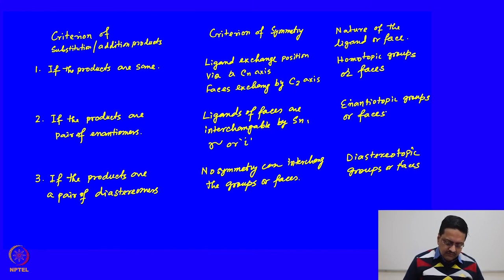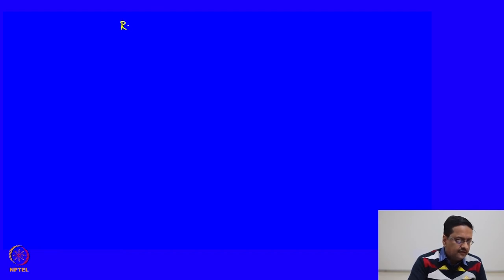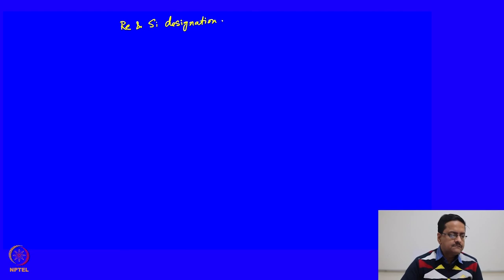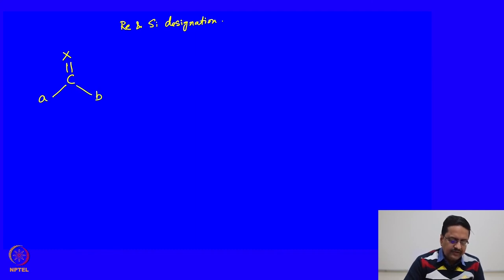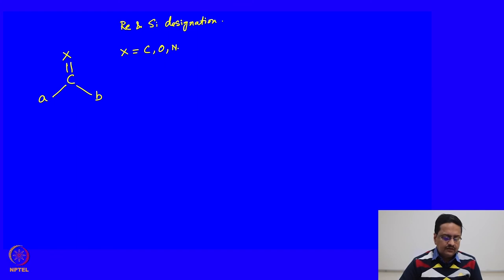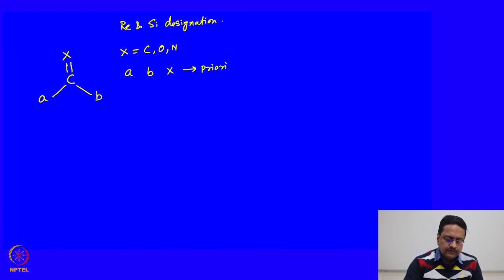I would like to introduce you to another method of nomenclature for these faces, called the re and si designations. Suppose we have a group C=X connected to two different groups A and B, where X can be carbon, oxygen, or nitrogen. We first identify A, B, and X in terms of their CIP priority order.